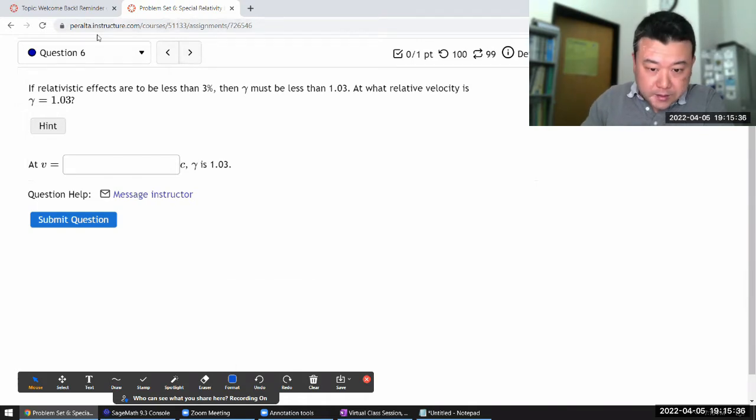The important thing here is simply setting the value of gamma, the Lorentz factor gamma 1.03. So gamma, which is given by 1 over square root of 1 minus v squared over c squared, the question is telling you that equals 1.03.